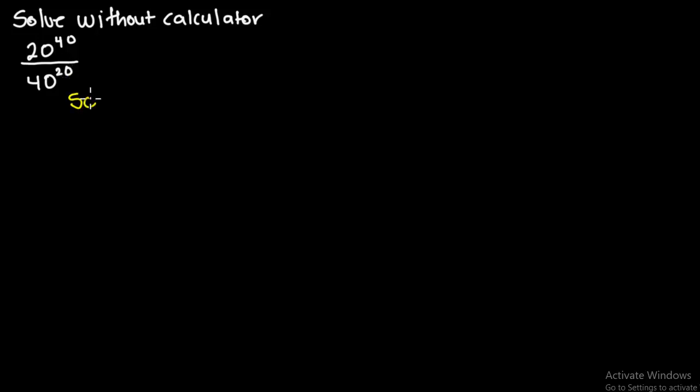In this question we're given 20 exponent 40 all over 40 exponent 20. Now what we are going to do here is rewrite 40 as 2 times 20. So in place of 40 you are going to write this over there.